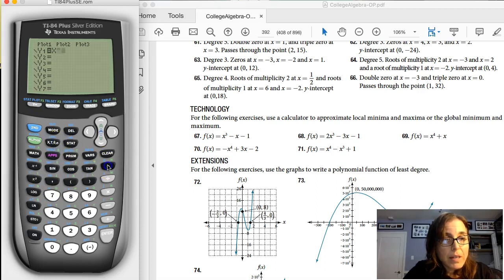And then let me go ahead and type in x to the 4th plus x, and I don't know what my last window was, so I'm just going to hit zoom 6. Alright, and let's see what we got.